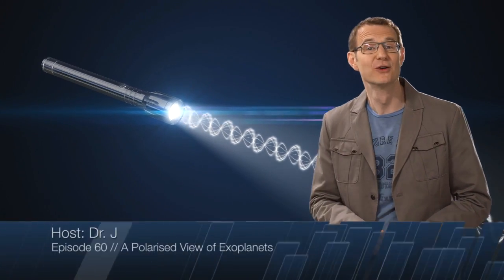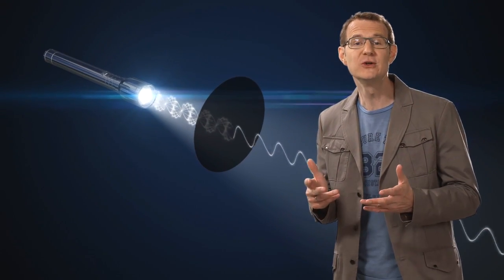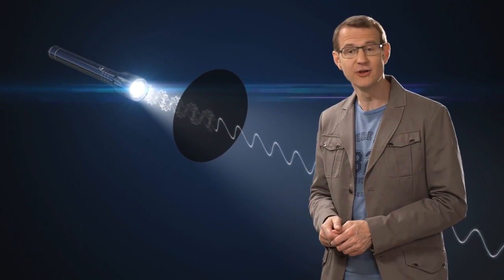In this episode of the ESOcast, we'll talk about a very special feature of light and how we can use it to detect planets around other stars.